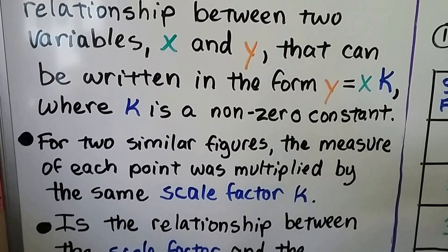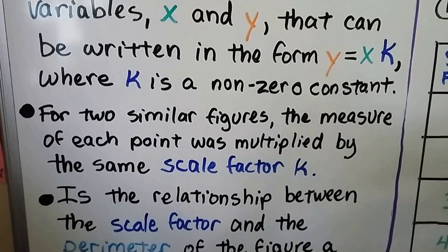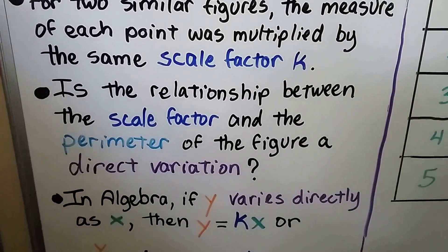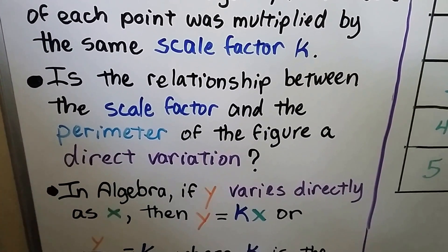For two similar figures, the measure of each point was multiplied by the same scale factor, k. So is the relationship between the scale factor and the perimeter of the figure a direct variation?